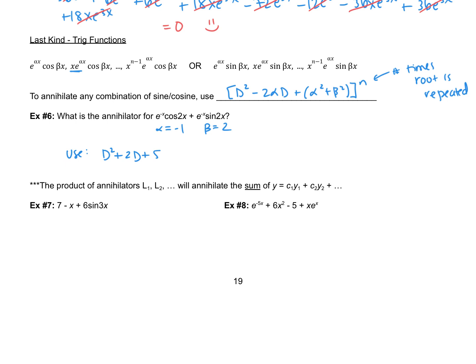The last thing we need to cover before solving: if we have a sum of functions, we take the product of the annihilators. For example, to annihilate 7 − x (a polynomial), we use D². To annihilate 6·sin(3x) with alpha = 0 and beta = 3, we use D² + 9. So to annihilate their sum, we use D²·(D² + 9).